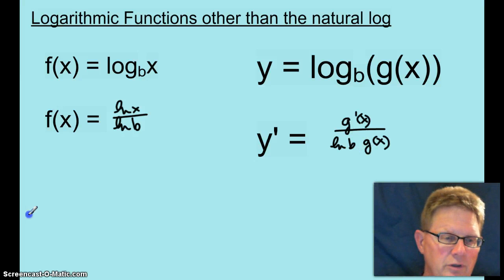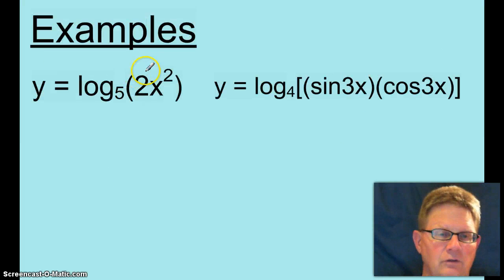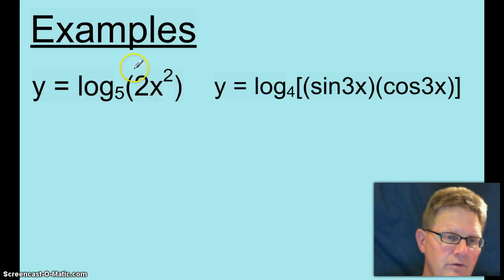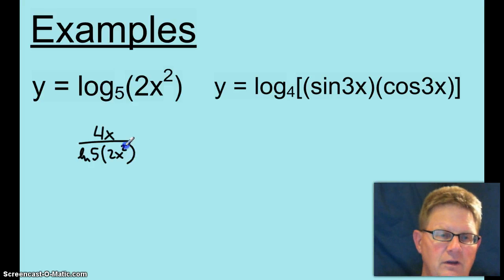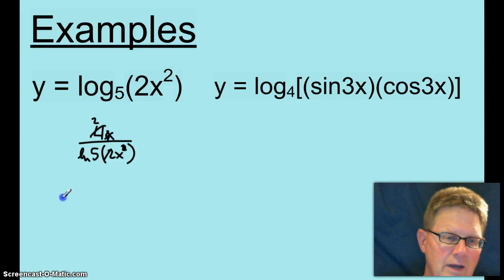So let's go ahead and put this into practice. What is the derivative of log base 5 of 2x squared? That would be the derivative of 2x squared, 4x over the ln of 5 times 2x squared, and I think we can cancel out a 2, we can cancel out an x and an x, so y prime would equal 2 over x ln of 5.